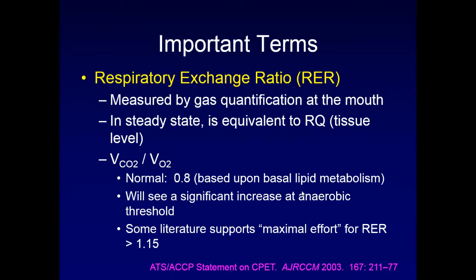The respiratory exchange ratio, or RER, is measured by gas quantification at the mouth. In a steady state it's equivalent to the respiratory quotient, or RQ, measured at the tissue level. The RER is the ratio of carbon dioxide production to VO2 uptake, with a normal value around 0.8, based upon basal lipid metabolism. You will see this number significantly increase at anaerobic threshold. Some literature supports using a maximal effort RER and RQ of greater than 1.15.